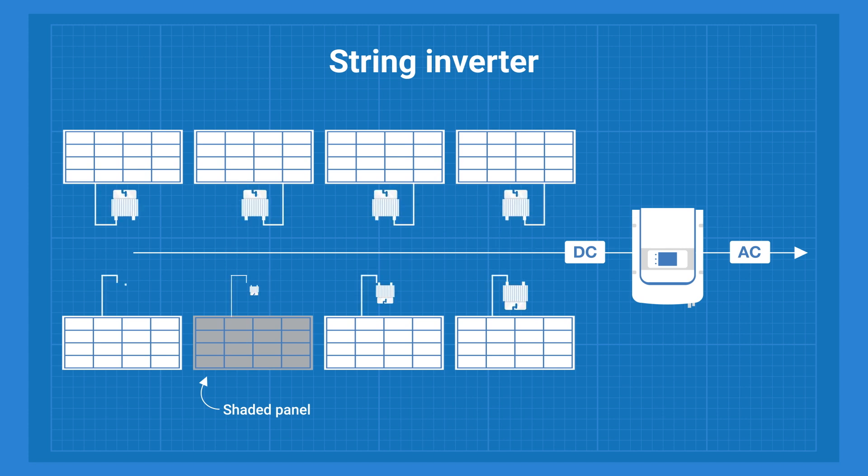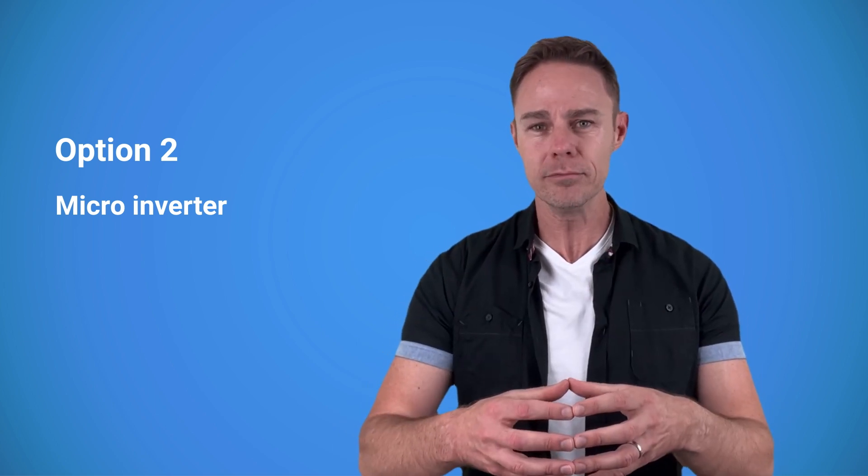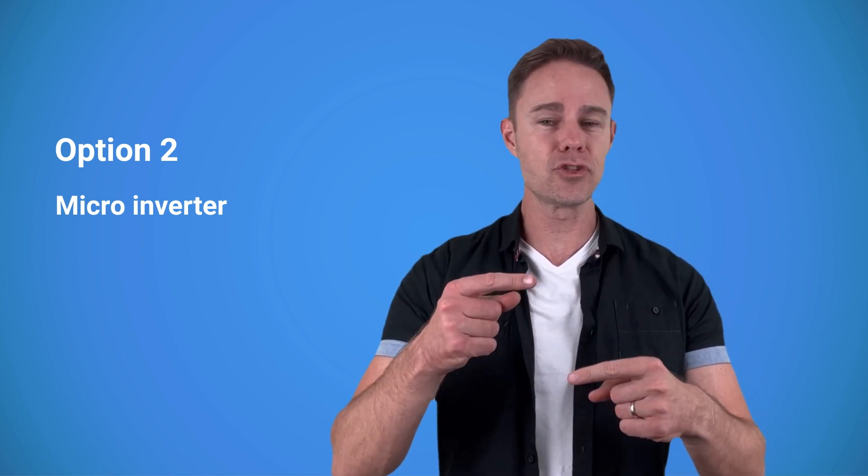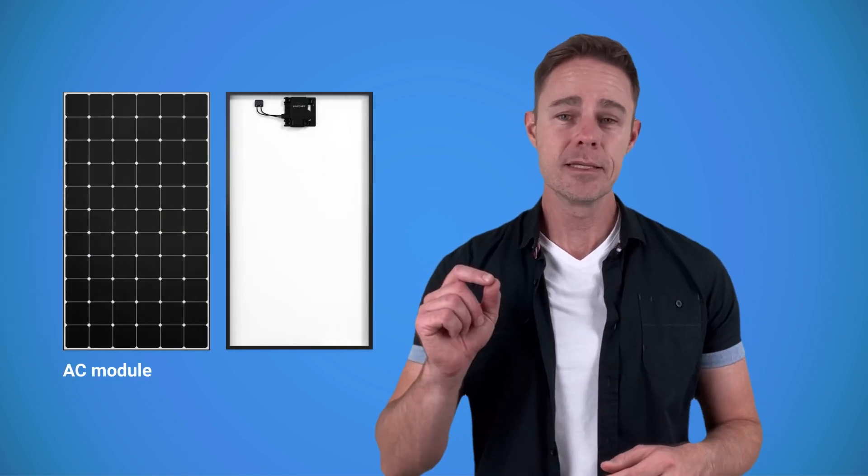There are ways to go around it. For example, people add power optimizers to panels to make each one independent. Another way to solve the problem is to choose micro inverters. A micro inverter goes directly on top of a solar panel and converts the DC from the panel to AC on the spot.